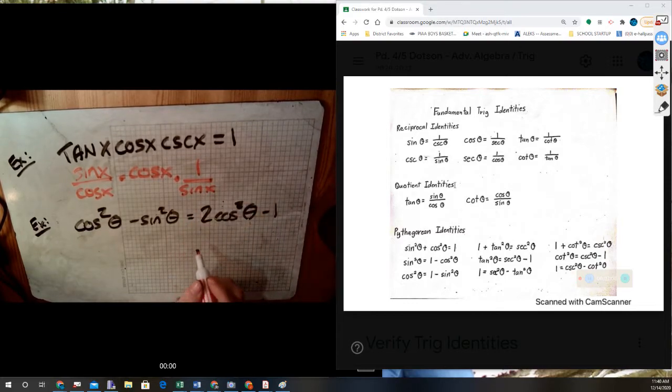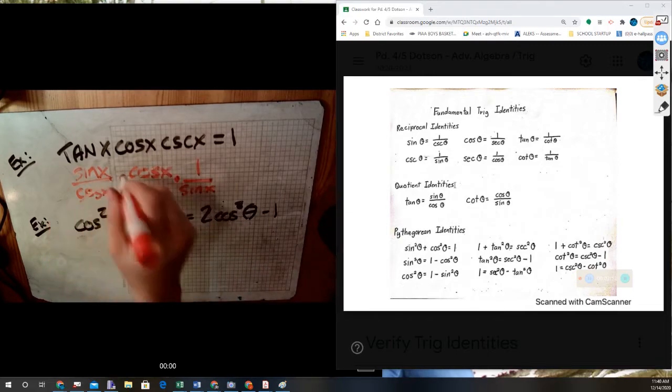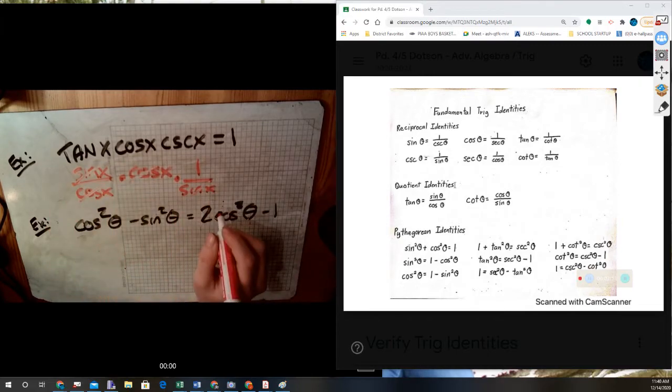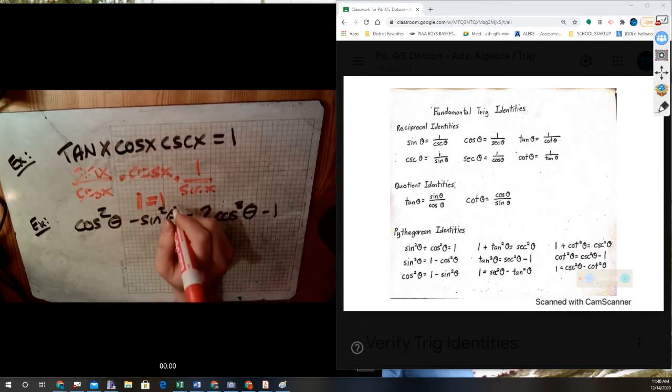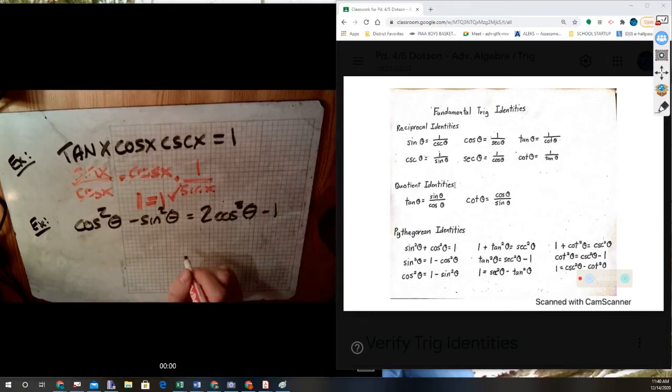So what I can do now is maybe some algebra. I have things that can cancel out. I have cosine on top and bottom. I have sine on top and bottom. Everything cancels out, so I'm just left with a one. And that equals what I wanted from the other side. That's good. That means I've done my problem correctly, and I am complete and done.